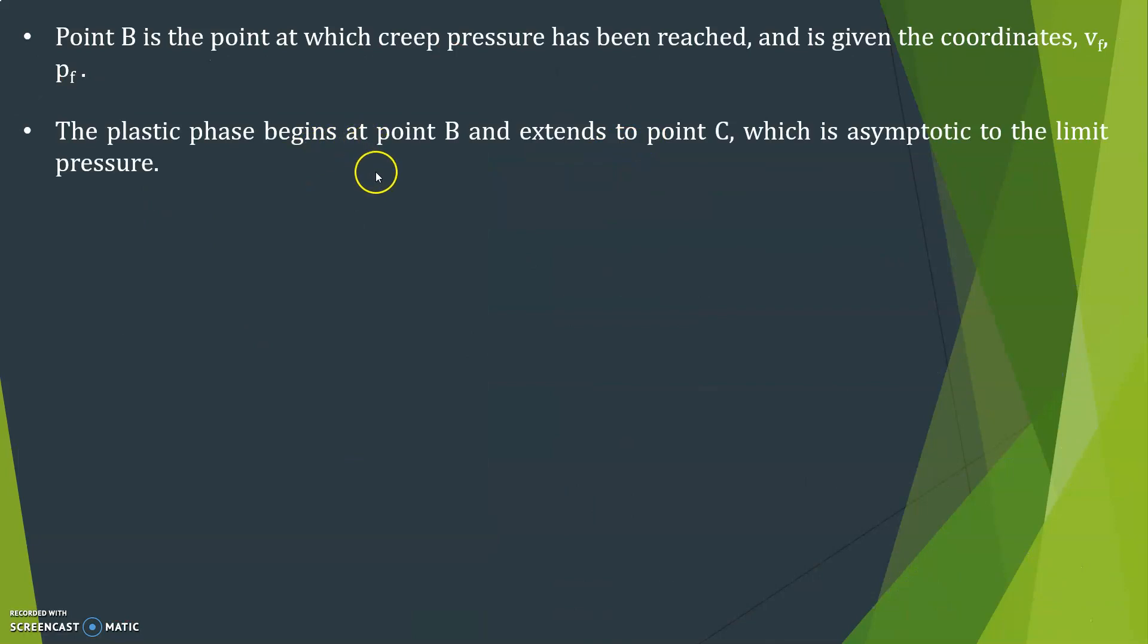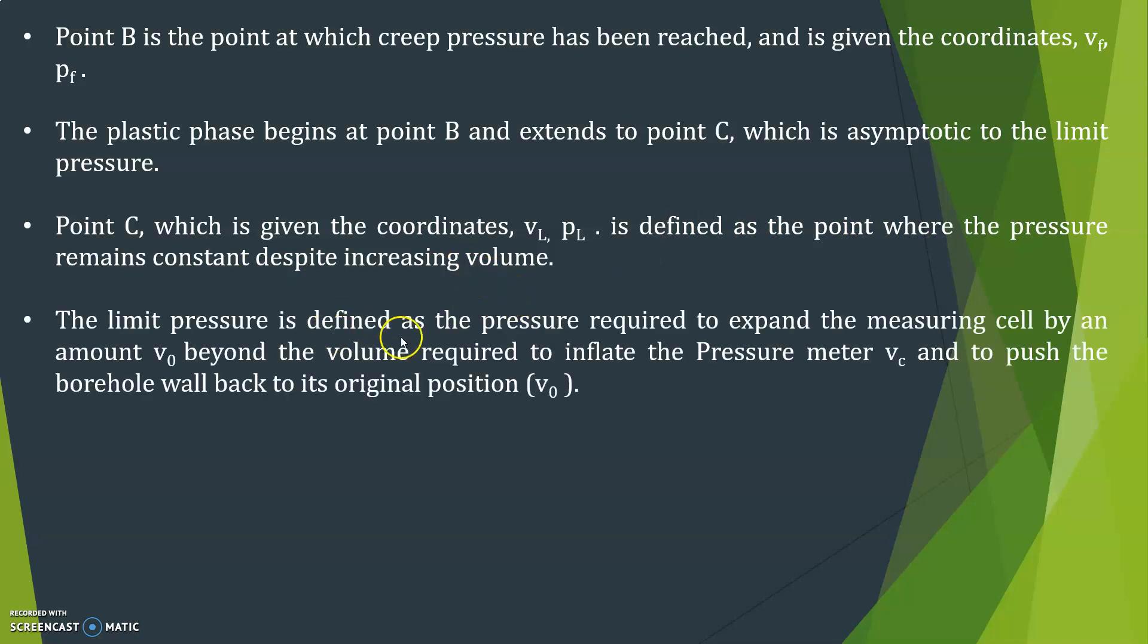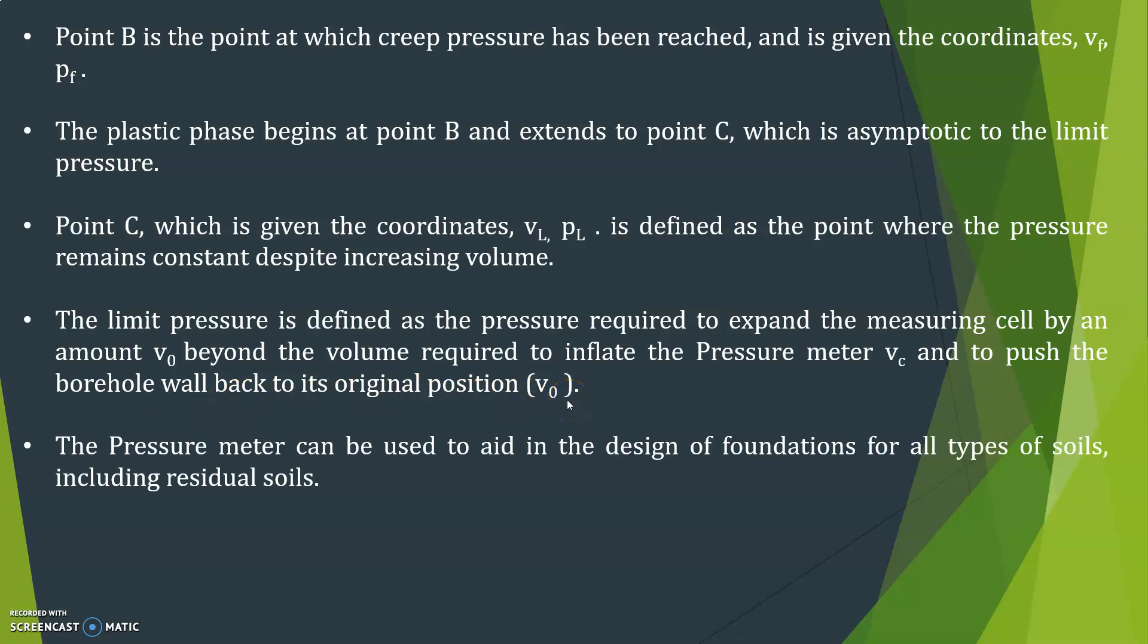The plastic phase begins at point B and extends to point C which is asymptotic to the limit pressure. Point C which is given the coordinates Vl, Pl is defined as the point where the pressure remains constant despite increasing volume. The limit pressure is defined as the pressure required to expand the measuring cell by an amount V0 beyond the volume required to inflate the pressure meter Vc and to push the borehole wall back to its original position V0. The pressure meter can be used to aid in the design of foundations for all types of soils including residual soils.